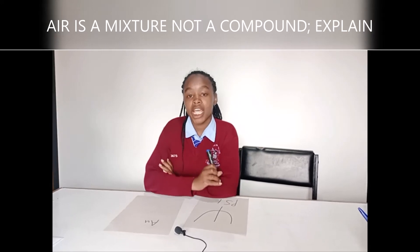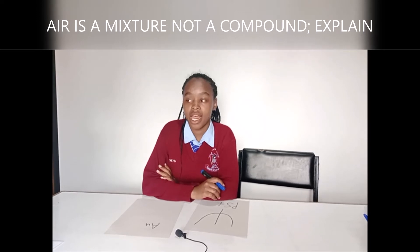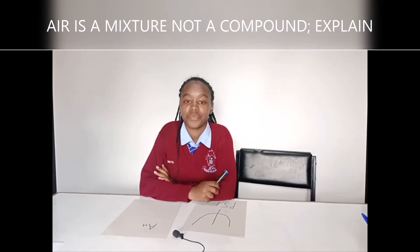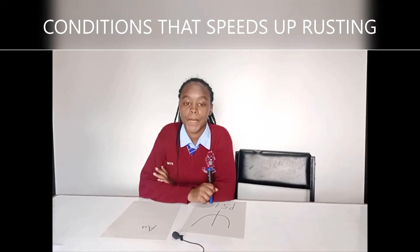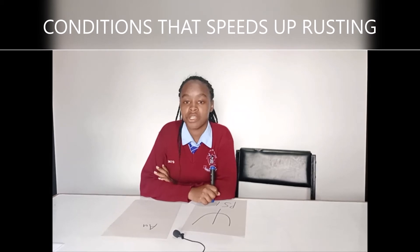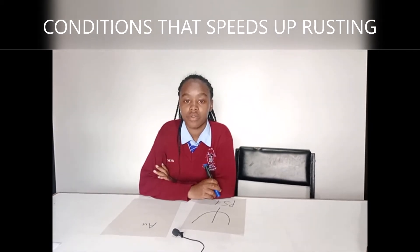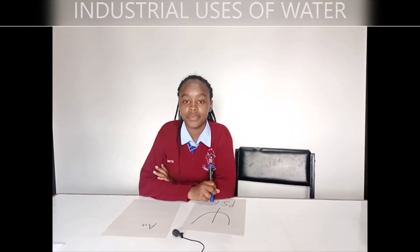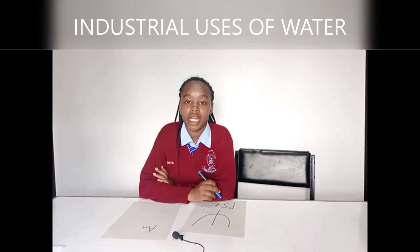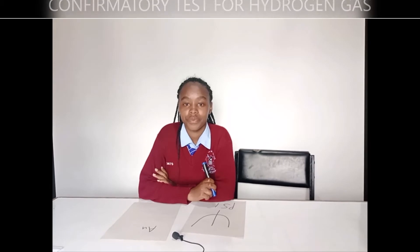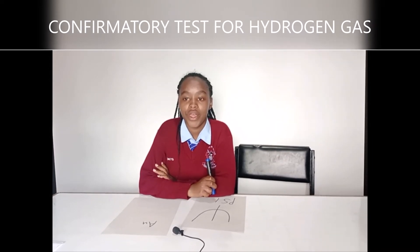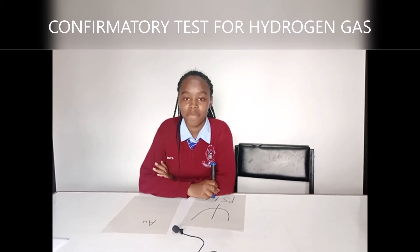Air is a mixture and not a compound — can you explain that statement? Air is a mixture of gases like oxygen, nitrogen, and water vapor. I don't give a point because air is a mixture and not a compound because the components are physically combined and not chemically combined. State two conditions necessary to speed up the rusting process. Acidity, saltiness, and high temperatures — salinity or acidity and high temperature. One industrial use of oxygen? Used in welding — correct. Two industrial uses of water? Used for cooling machines and mixing of chemicals — correct. What is the confirmatory test for hydrogen? It puts off a burning splint with a pop sound or minor explosion.